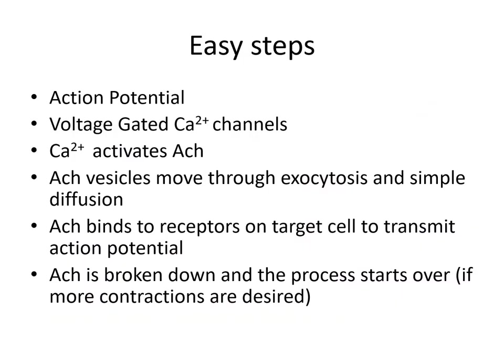To summarize the easy steps: the action potential is generated from the neuron and heads down to the axon terminal, where it activates voltage-gated calcium channels. Calcium diffuses in and activates ACh — acetylcholine, a neurotransmitter. ACh vesicles move through exocytosis and simple diffusion across the synaptic cleft. Acetylcholine then binds to receptors on the muscle cell to transmit the action potential. The acetylcholine is then broken down at the motor end plate and the process starts over if more contractions are desired. If relaxation occurs, the acetylcholine is broken up and no more contractions can occur.